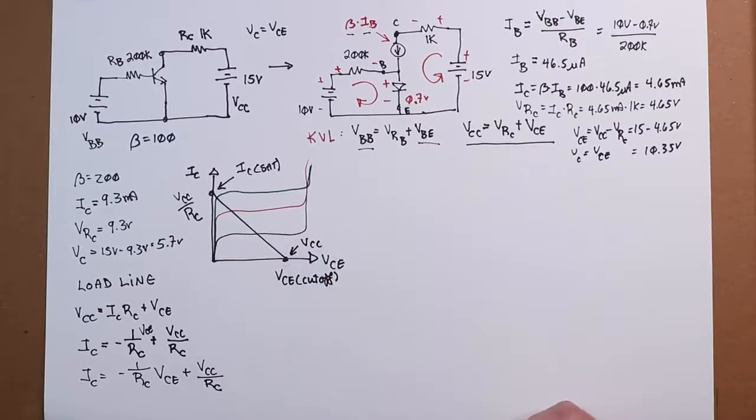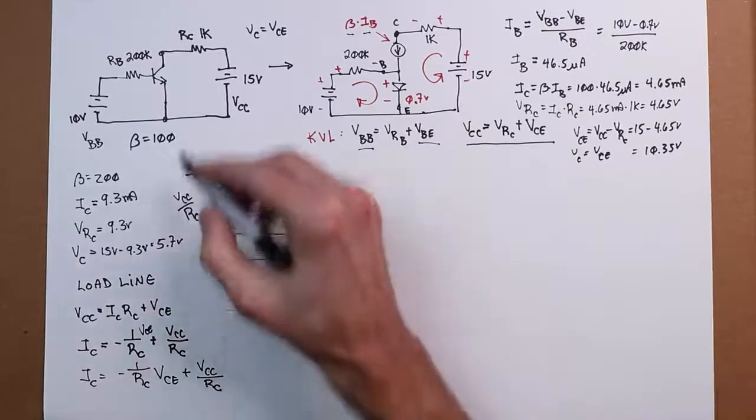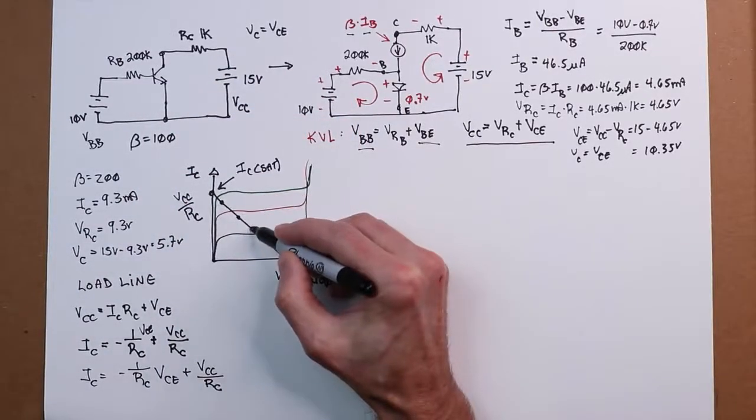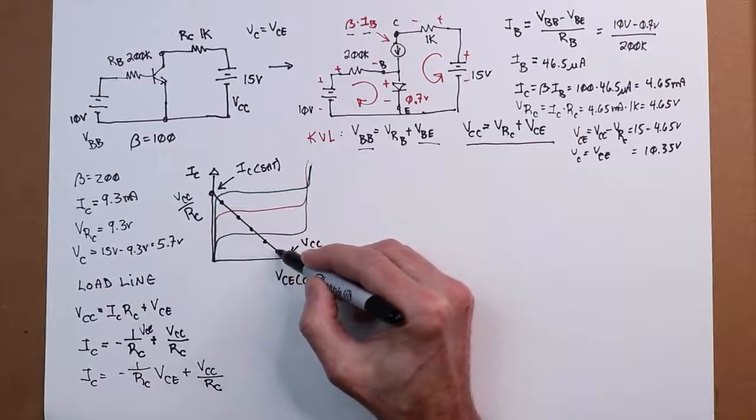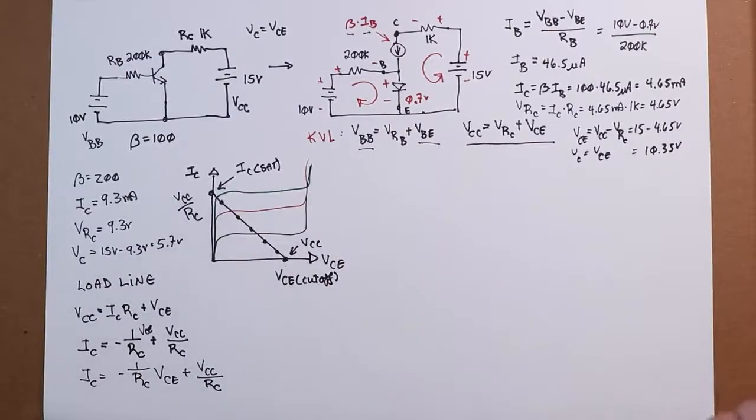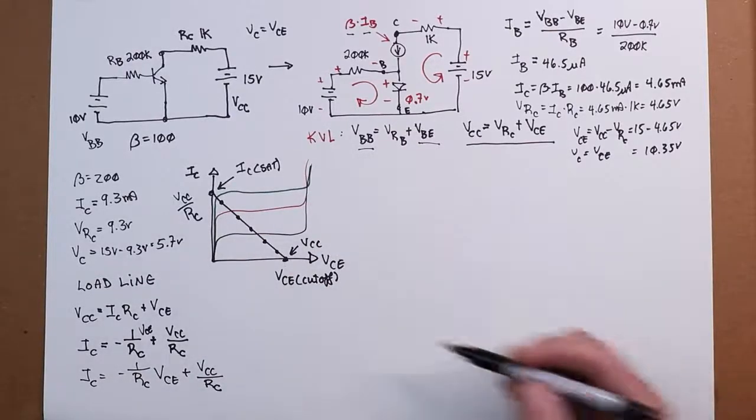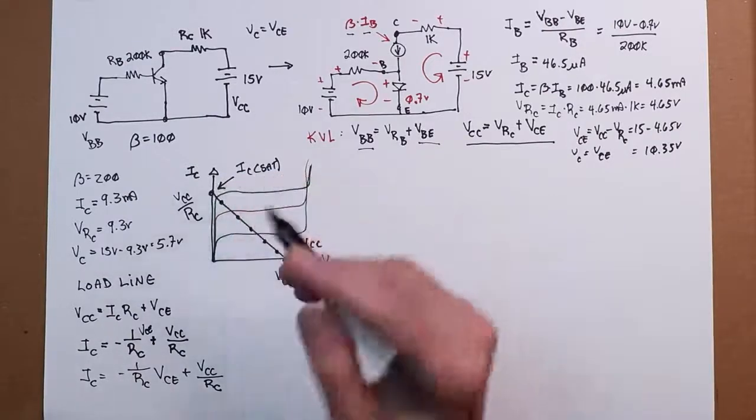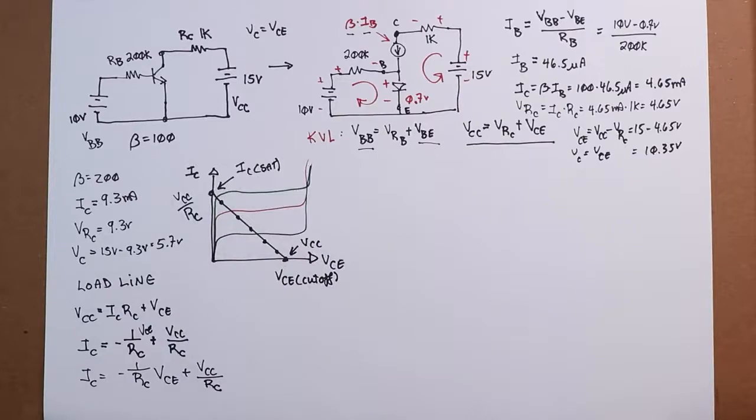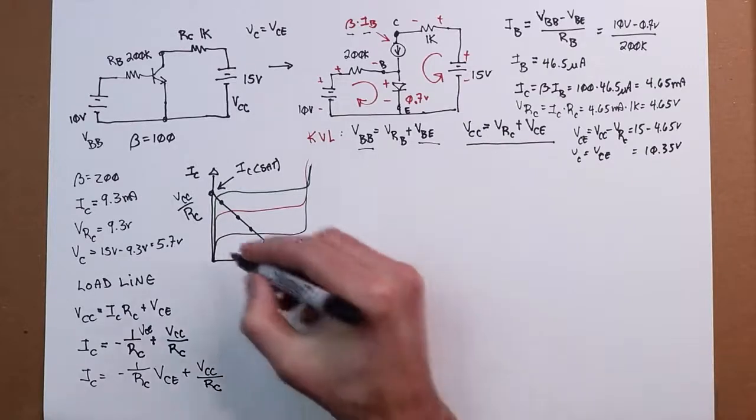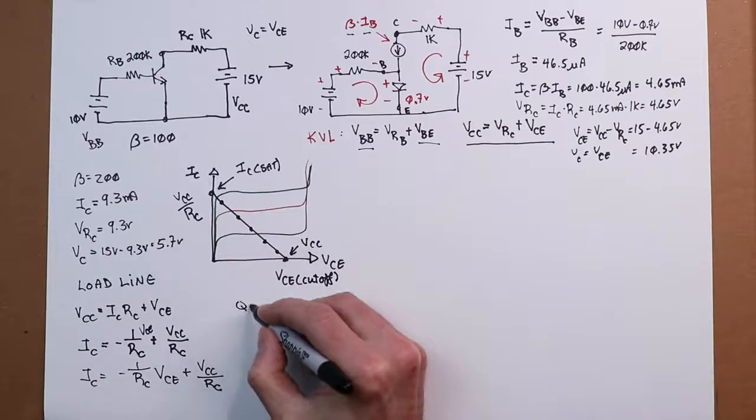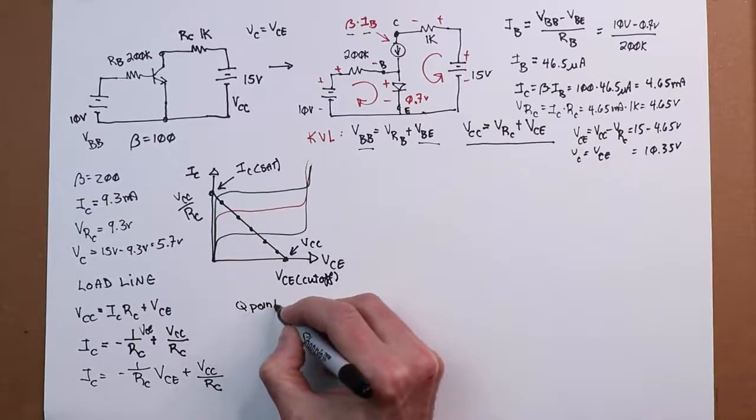That's the load line. In other words, no matter what beta I choose, the current voltage characteristic that we come up with, that pair of numbers, has to lie on this line. Obviously if we're over here way up here, we're in saturation. That creates a limit. Each one of these operating points we call a Q point or a quiescent point. That's where the circuit is operating.